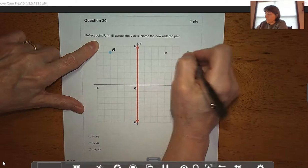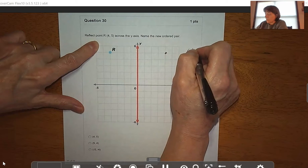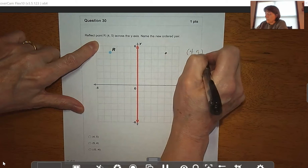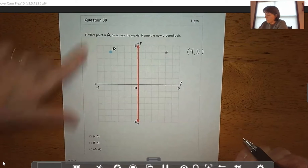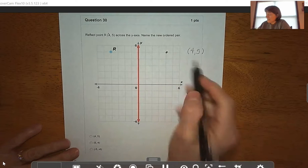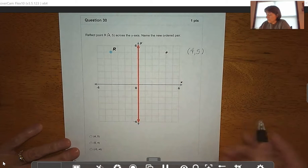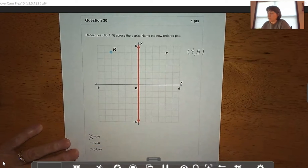3, 4 in the opposite direction on the same line away from y. So that goes over 1, 2, 3, 4, and up 1, 2, 3, 4, 5. That new point is going to be (4, 5). Actually, R is (-4, 5), and I will correct that before you see the quiz. So the new point should be (4, 5).